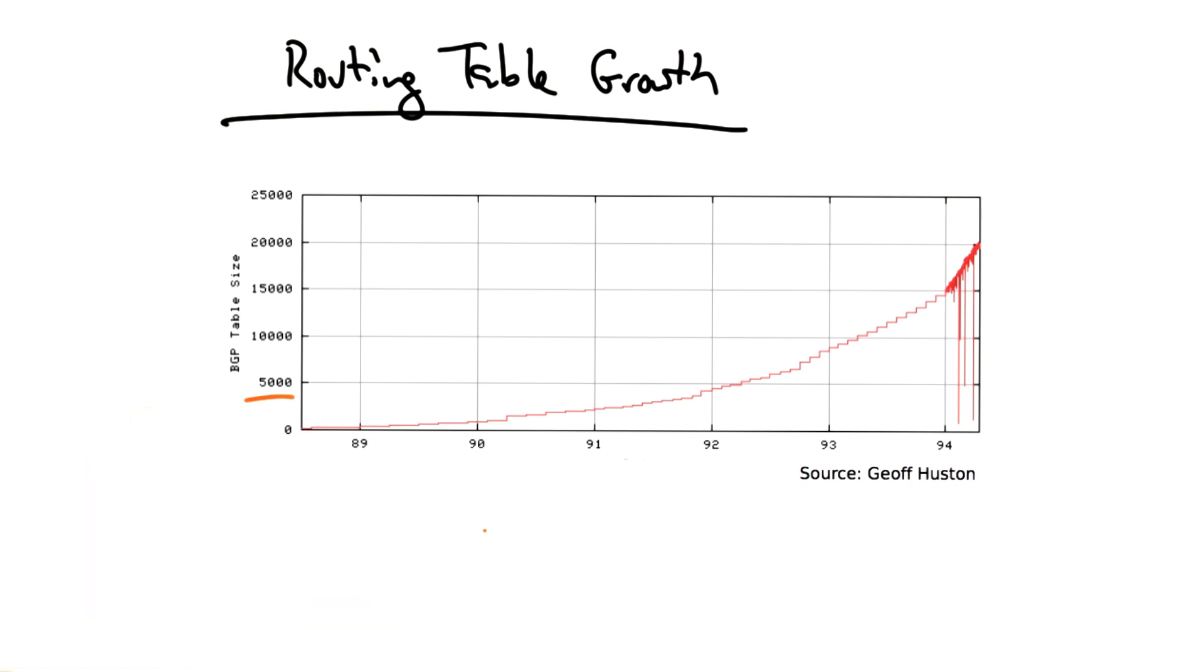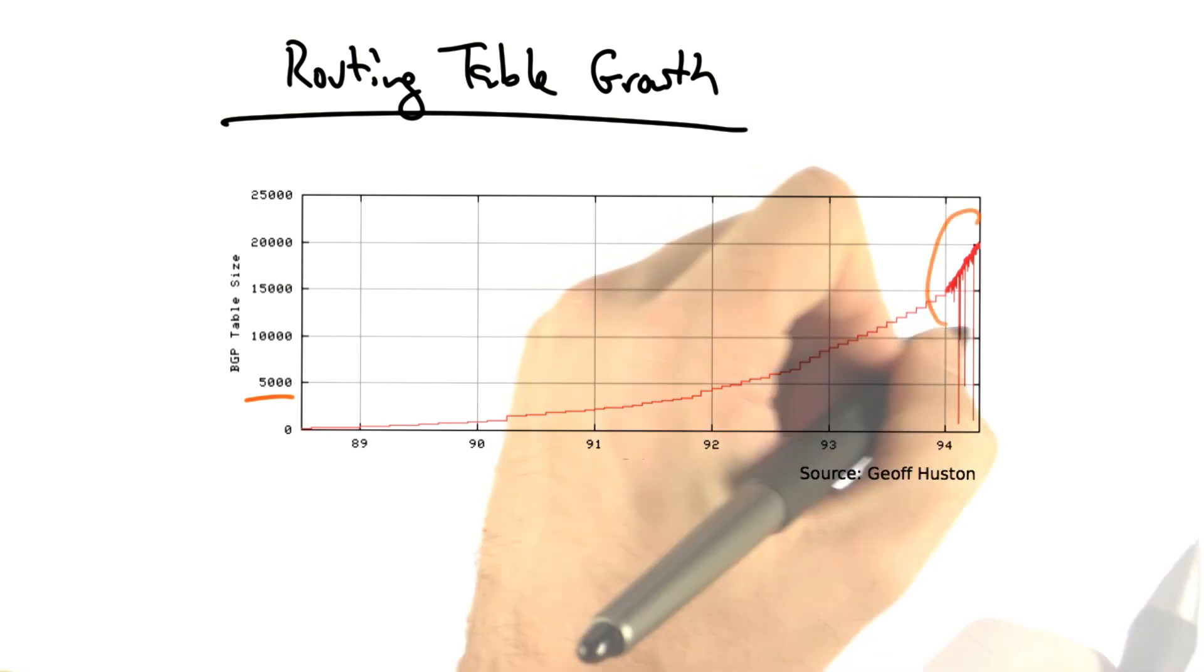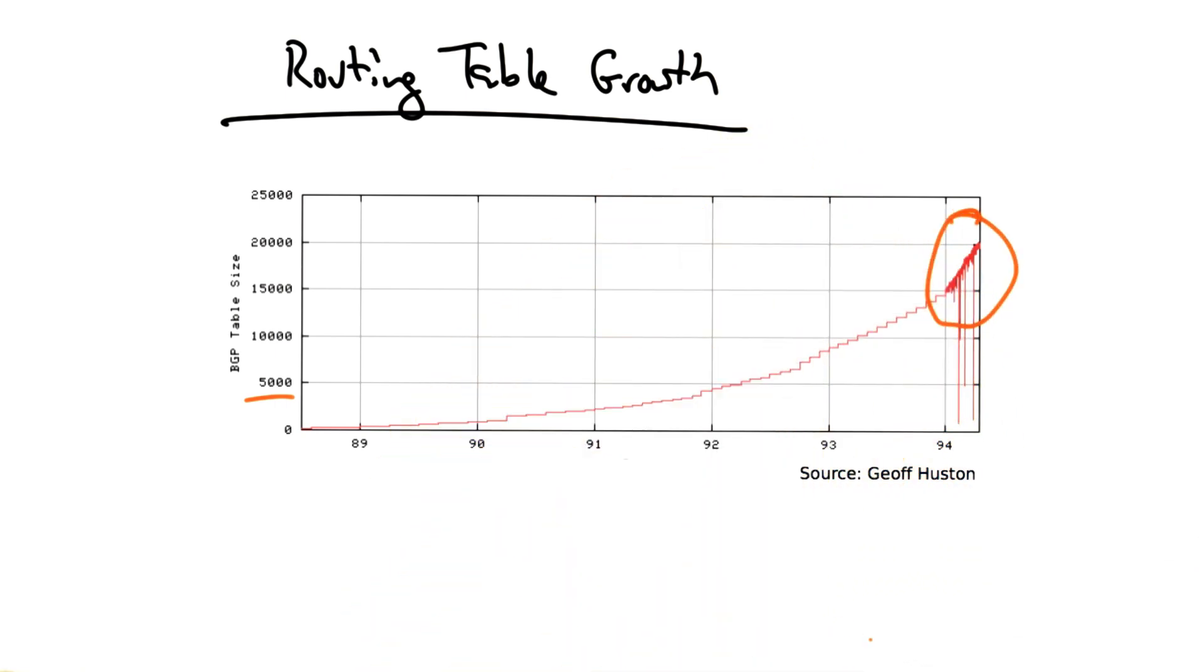By comparison, now we have about 500,000 IP prefixes in the Internet routing table. But we can see in this period that Internet routing table growth began to accelerate.